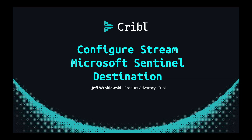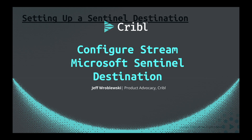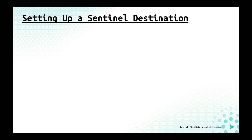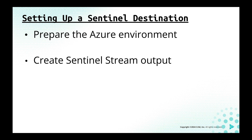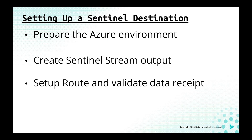Note that most of these steps will also apply to an on-premise or customer-managed installation as well. In this video, we'll be performing these steps: first, we'll configure our Azure workspace to get the necessary components in place, such as our data collection endpoint, data collection rule, and authorizations. Next, we'll take the results of this work and configure the Kribble Stream Sentinel destination. And last, we'll set up a route and do a quick test to make sure data arrives to Sentinel as expected.